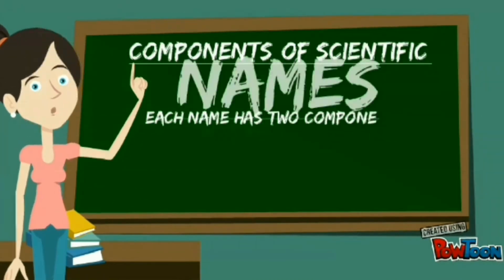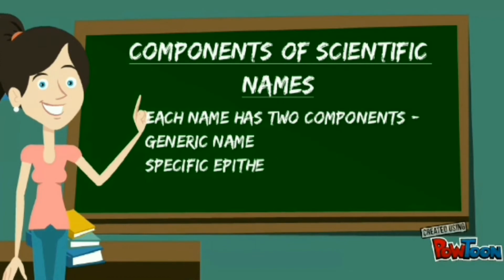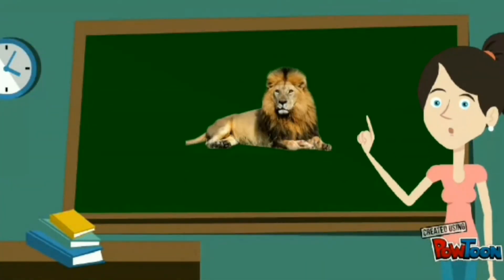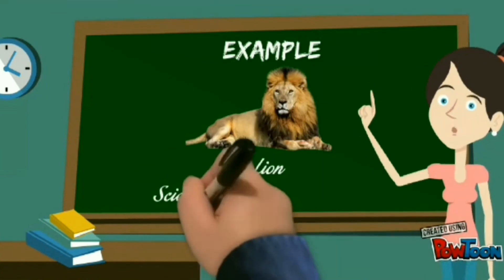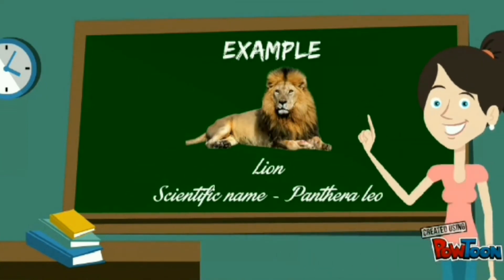Each name has two components: generic name and specific epithet. Example — Lion, scientific name Panthera leo.